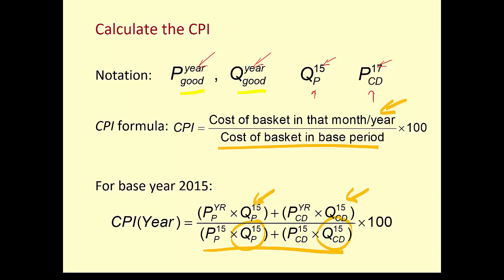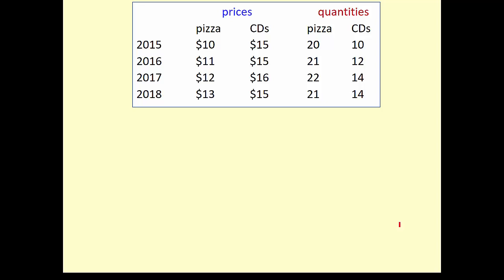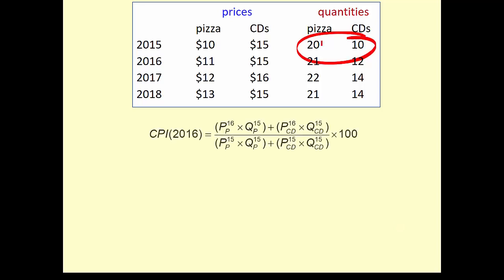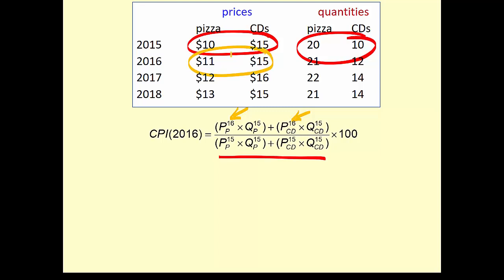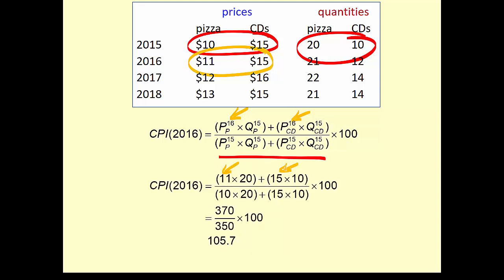If we use 2015 as our base year, our basket of goods is the 2015 quantities of pizzas and CDs. If we're calculating the CPI for the base year, it will always be 100 — the numerator and denominator are equal and cancel out. For 2016, we use the 2015 basket in the denominator with 2015 prices, and the 2016 prices in the numerator.